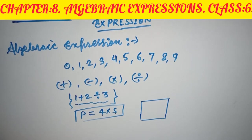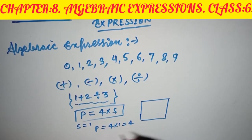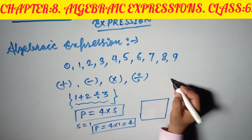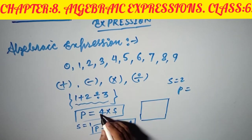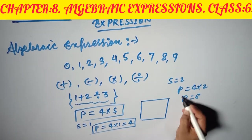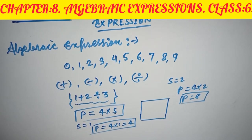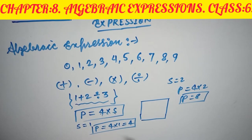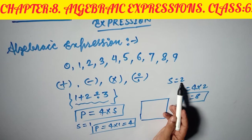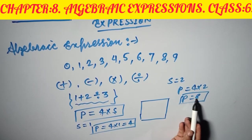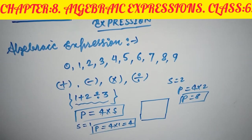If S equals 1, then P equals 4 multiplied by 1, which equals 4. If S equals 2, then P equals 4 multiplied by 2, which equals 8, and so forth. So we observe that P tells us a particular number depending on the value we put in place of S.